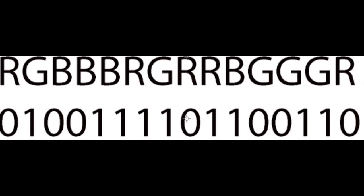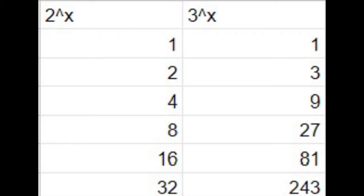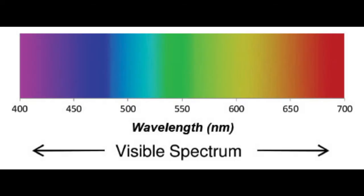Trinary is basically the idea of having three different letters to represent your codes instead of just ones and zeros. The practical upshot is basically the ability to store a lot more data in a lot shorter sequences of code. Trinary computing would transmit information even faster than binary because it would be based off of shades of light.